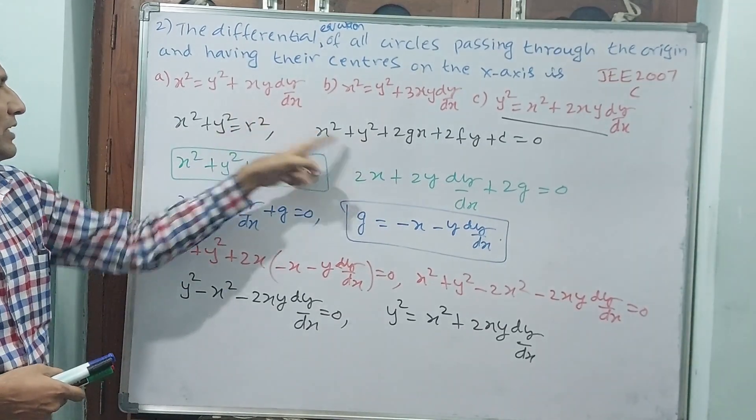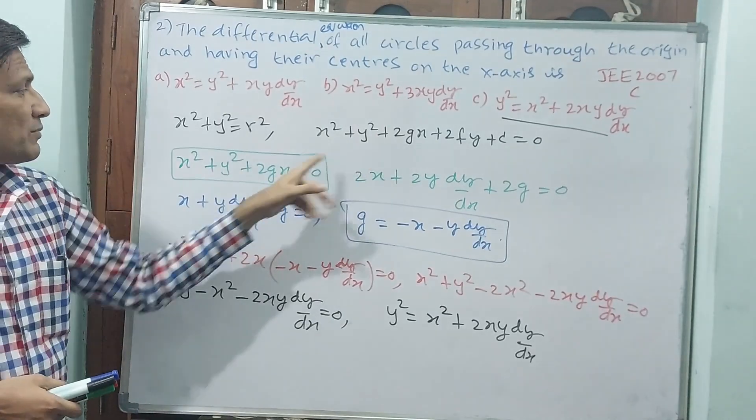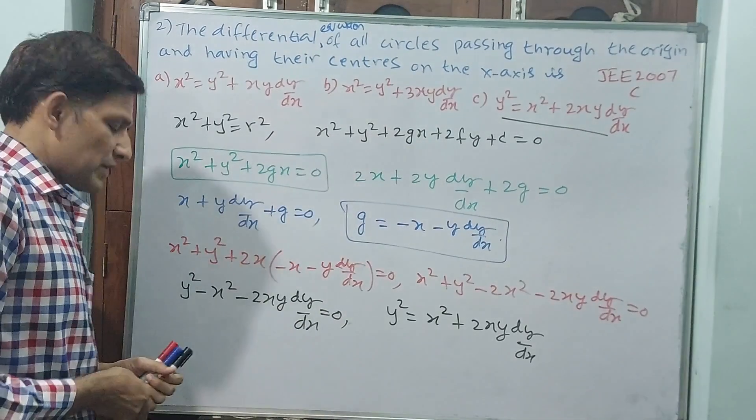You have to know this formula, standard formula. On x-axis means this operates. On y-axis means then 2x will not be there, 2fy will be there. Okay. Let us go to the next question.